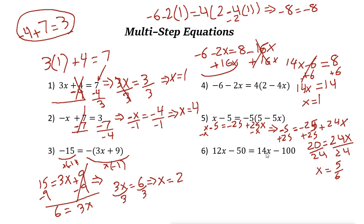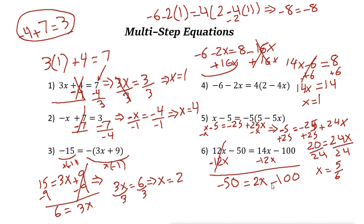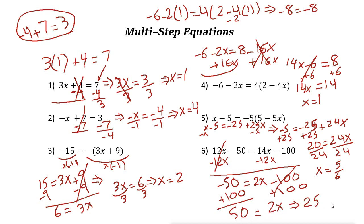Let's take a look at the last one. Again, we have variables on both sides. To bring variables to one side, choose the smaller one. The smaller one here is 12x and the other is 14x, so subtract 12x from both sides. 12x minus 12x is just 0, so negative 50 equals 14x minus 12x minus 100, which is 2x minus 100. Add 100 to both sides: negative 50 plus 100 is 50, equals 2x. Divide both sides by 2: 50 divided by 2 is 25, so x equals 25. Now plug in 25 to check your answer.